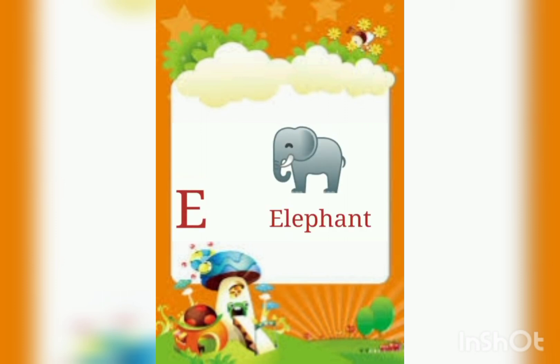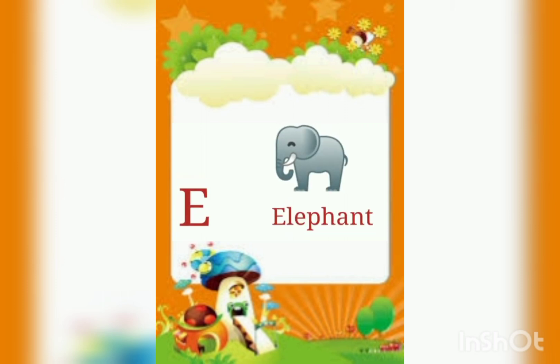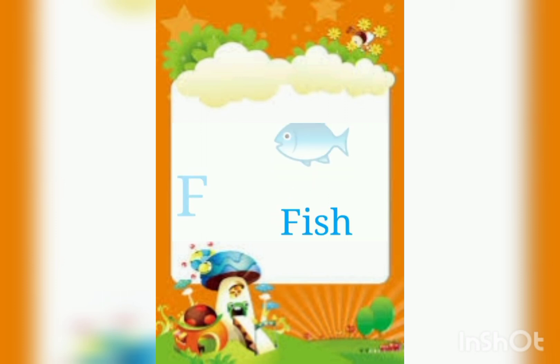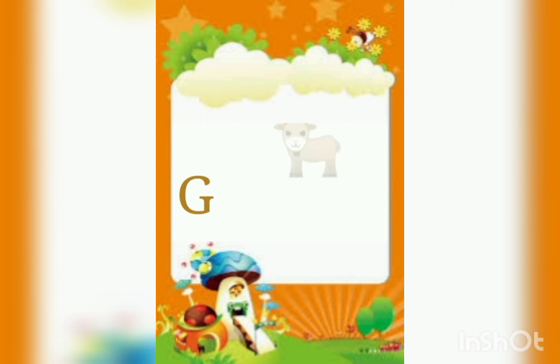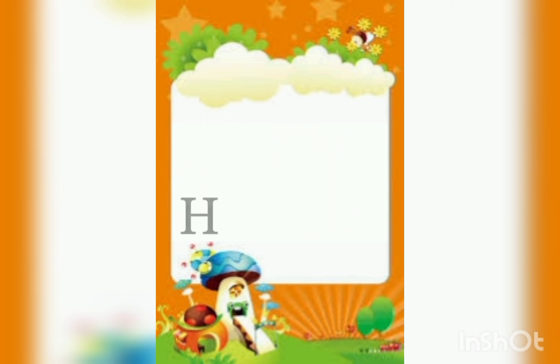E. E for Elephant. F. F for Fish. G. G for Goat. H. H for Hen.